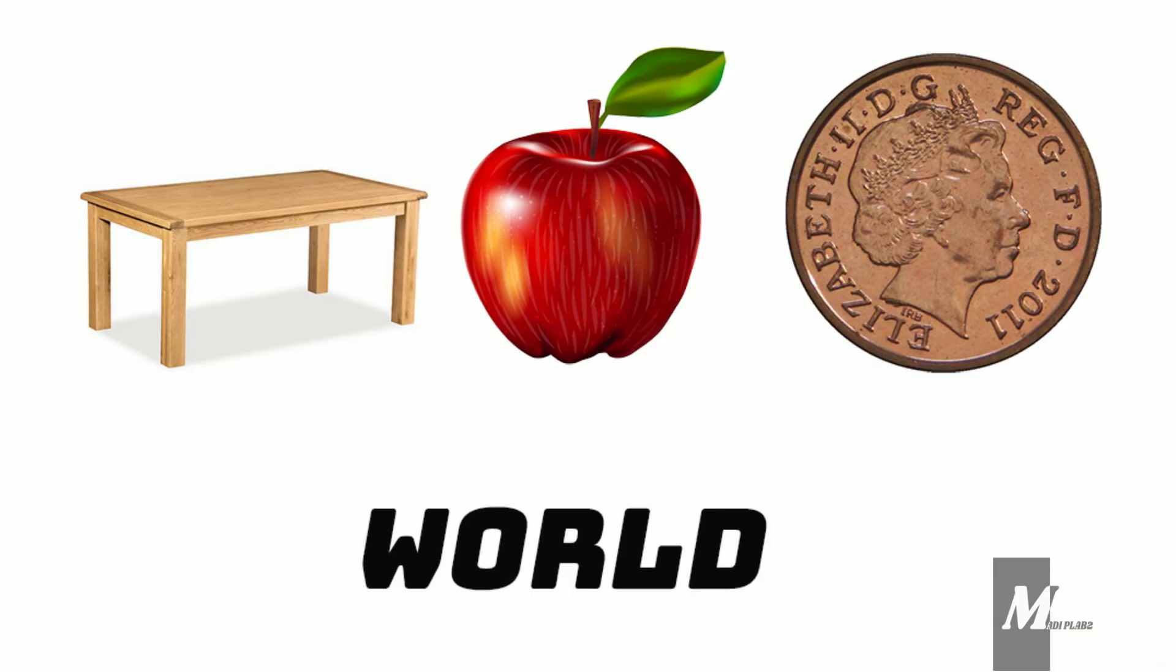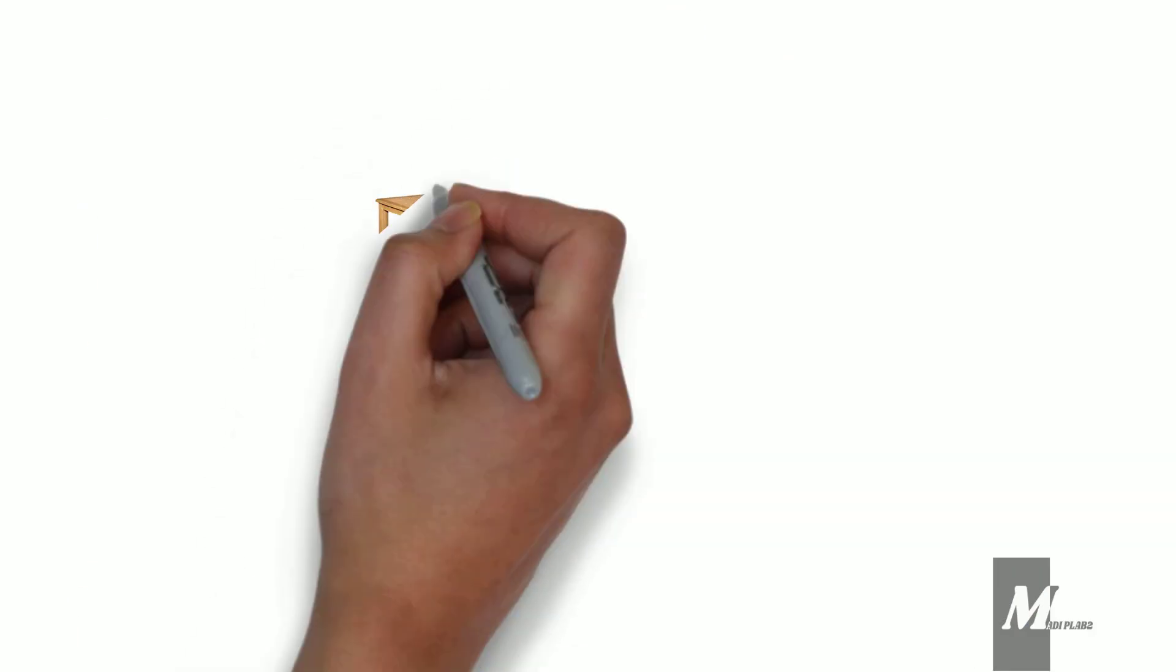Can you repeat after me, John? Apple, table, and penny. Can you spell the word 'world' backward? Now, can you remember the three things?